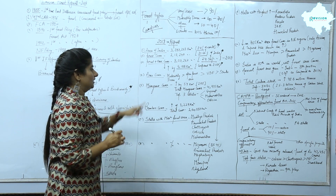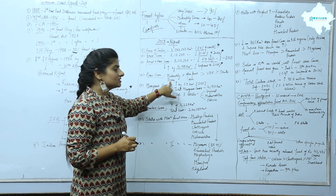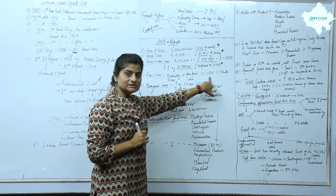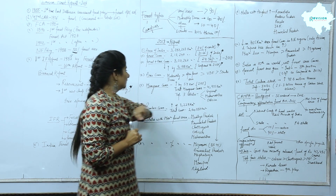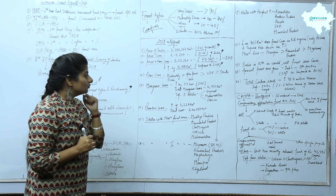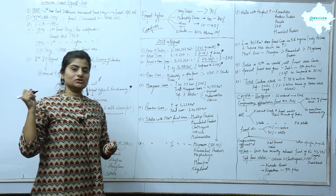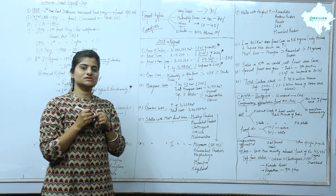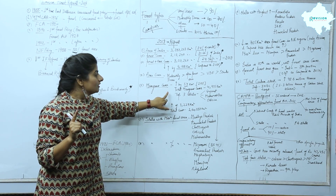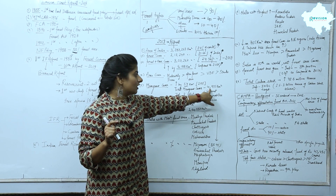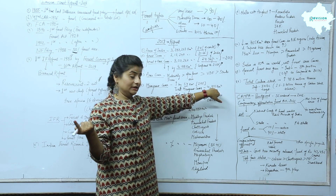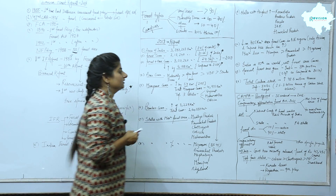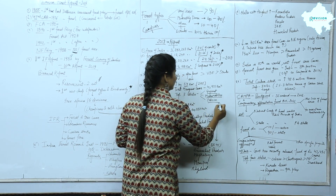If we look at area cover in 2019, the ranking is: most is moderately dense forest area, then open forest area, then very dense forest area, and then scrubs. Fifth, regarding mangrove cover, there is a very positive sign — 54 km² of mangrove area has increased, which is 1.10%. The total mangrove area is 4,975 km². The top 3 states with mangrove cover are Gujarat, Maharashtra, and Odisha.